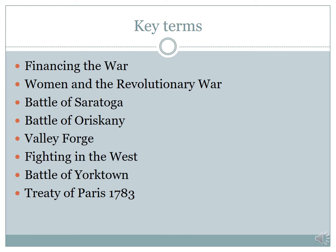Remember what I said about those treaties in Paris — always make sure that you know the date. The Treaty of Paris of 1783 is the one that ends the Revolutionary War. The Treaty of Paris of 1763 is the one that ends the French and Indian War. Okay, so let's go ahead and get started.